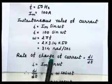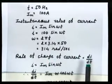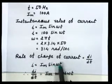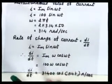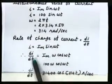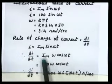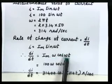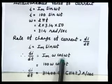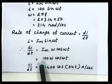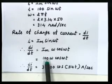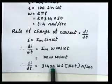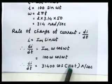Now, rate of change of current equals di/dt. The instantaneous equation of current is im sin(ωt). To find di/dt, differentiate this equation with respect to time. di/dt = im × ω cos(ωt), since the differentiation of sin(ωt) is ω cos(ωt). So di/dt = im × ω cos(ωt) = 100 × ω cos(ωt).